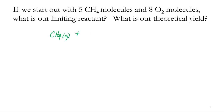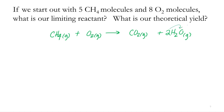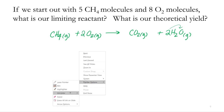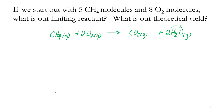So methane reacting with oxygen — if you have complete combustion of an organic compound with oxygen, the products will always be CO2 and water. Then we need to balance it. I've got one carbon on the left side, one carbon on the right side — good. I've got four hydrogens on the left, two on the right, so I'm going to need to put a coefficient of two there. I've got two oxygens on the left, two oxygens in CO2, two oxygens in water — two plus two is four — so I'm going to need a two for oxygen. Now that I have my balanced chemical equation, I can start to work on this stoichiometric calculation.